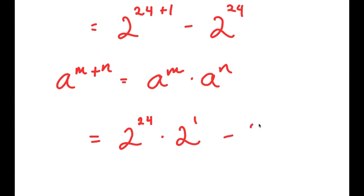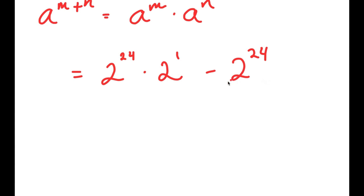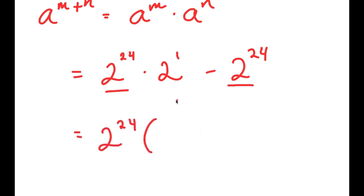I still have minus 2^24. From here I'm going to factor out 2^24, because both terms contain 2^24. So I get 2^24 times (2^1 minus 1), since 2^24 divided by 2^24 is just 1, giving negative 1 for the second term.